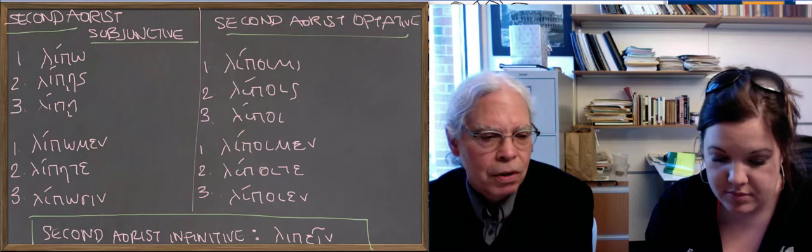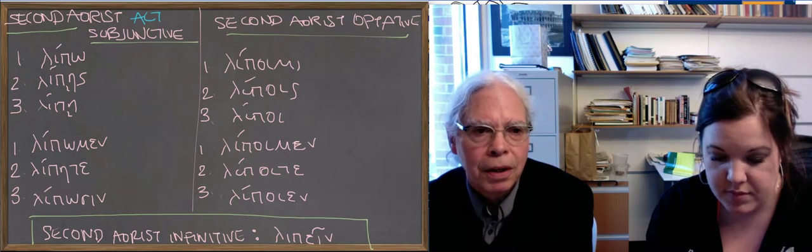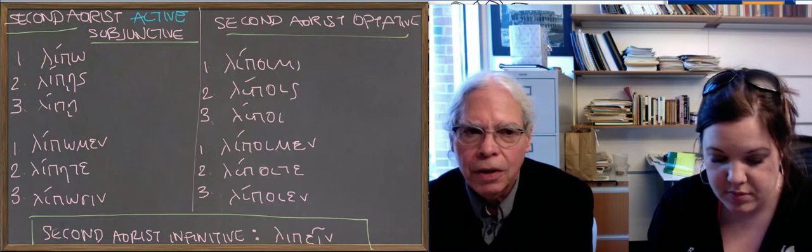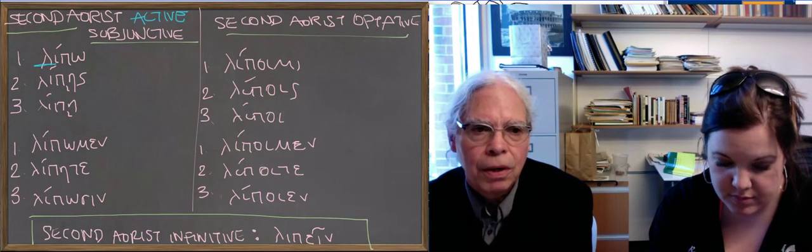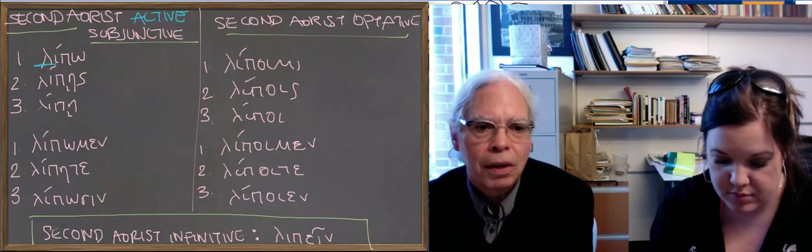There's what you would expect. You start with a form lip, and then you add the endings of a subjunctive, which are the ones with the long thematic vowel, o-e-s-e, o-men, eta, o-si.